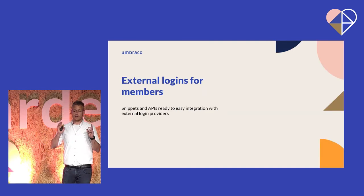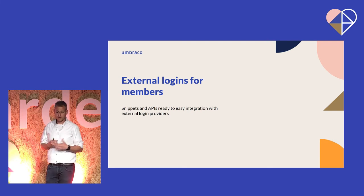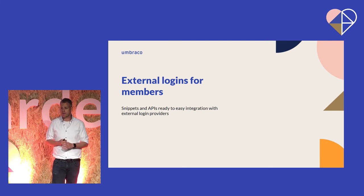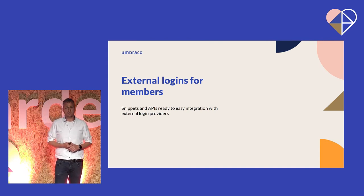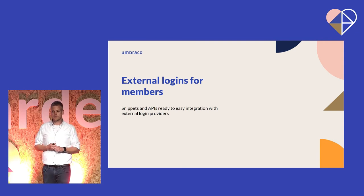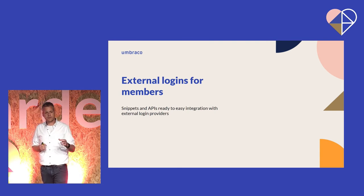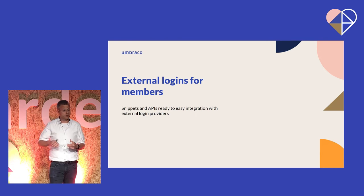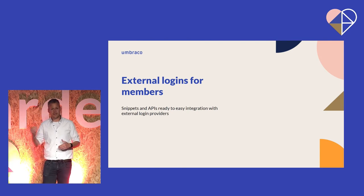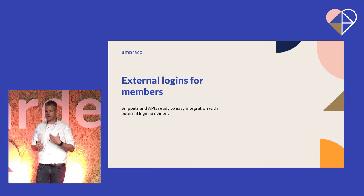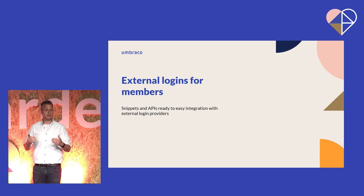We also introduced external login for members. This was a highly requested feature. The snippet is updated and the documentation is clear on how to set up Facebook, Twitter, and everything. And especially for members, the feature we call Autolink is incredibly important, because using this feature you can allow users to log in using their Twitter, Google, or whatever without having an existing member. In that case, we just create a member and Autolink it. And also, if they have a member but use the same email for the external login, we will Autolink those.